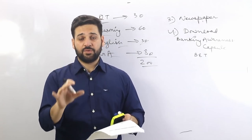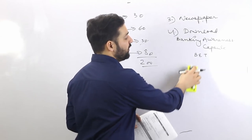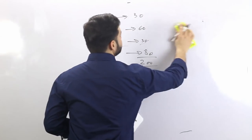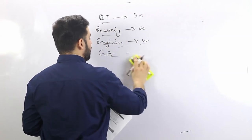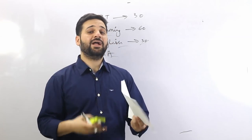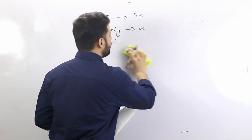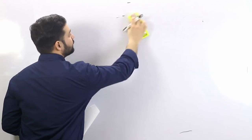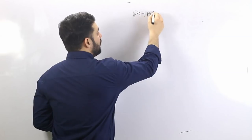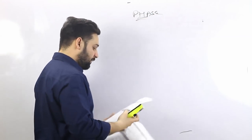If you have an Android phone, install the Bank Exams Today Android application — that will be very useful. We will conduct one-to-one live sessions and have a WhatsApp group. Join the course — the link to join will be available in the description. Let's move on to the phase two part. In phase two, there are basically three papers.